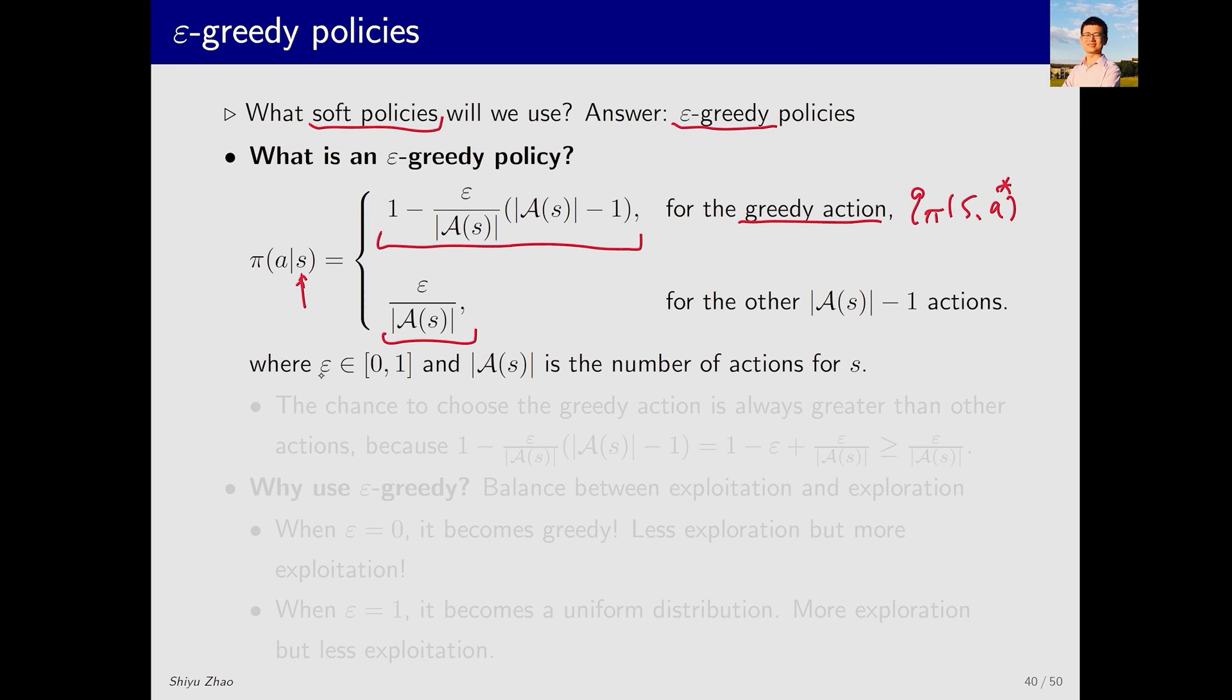Here, epsilon is a positive number ranging from 0 to 1, and |A(s)| is the number of actions corresponding to state S.